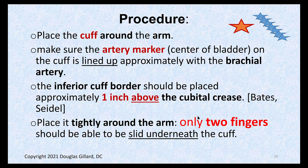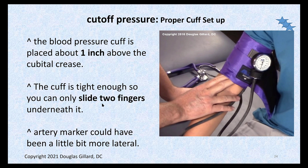Put the cuff around the arm with the artery marker centered over the brachial artery. The bottom of the cuff should be about one inch (two fingers) above the cubital crease. Tightness should allow only two fingers to slide in — most people make the cuff too loose, so make sure it's pretty snug.